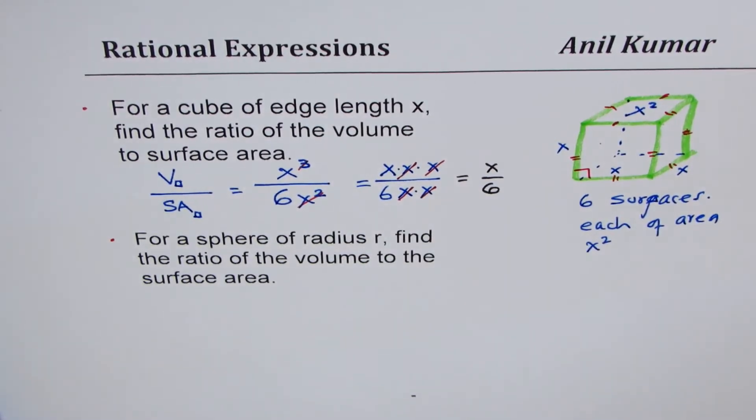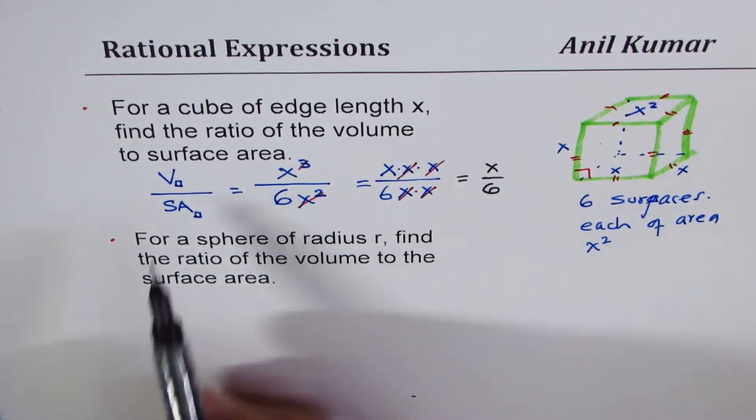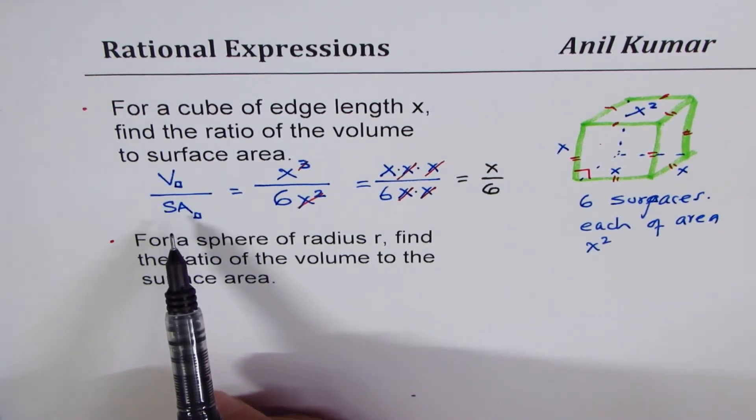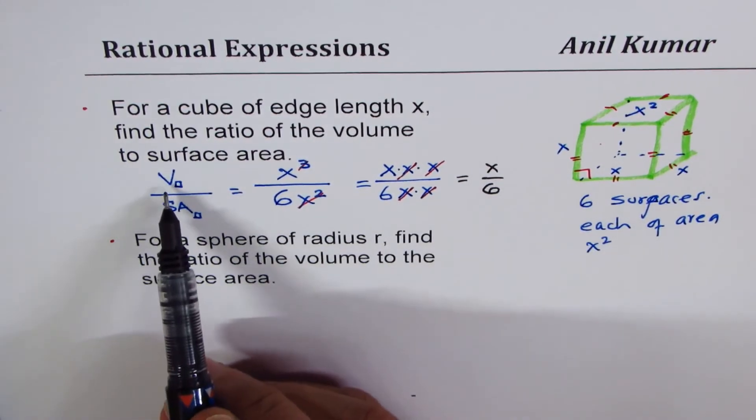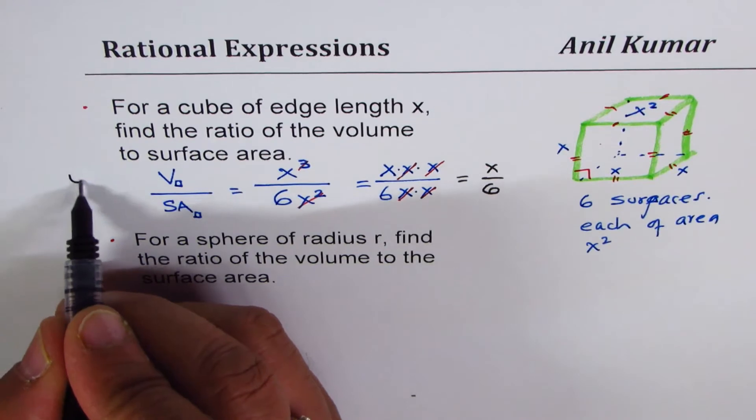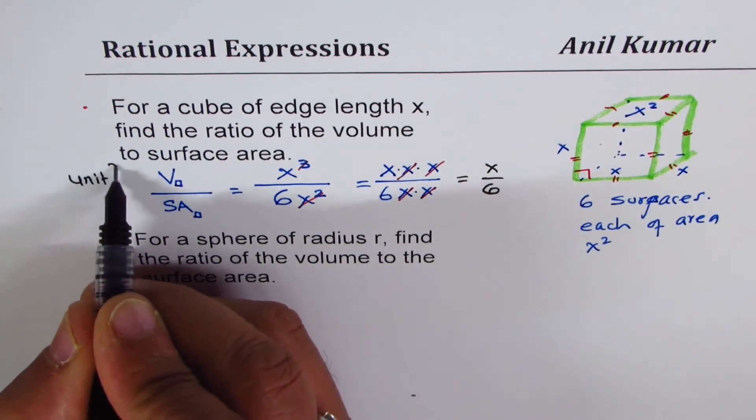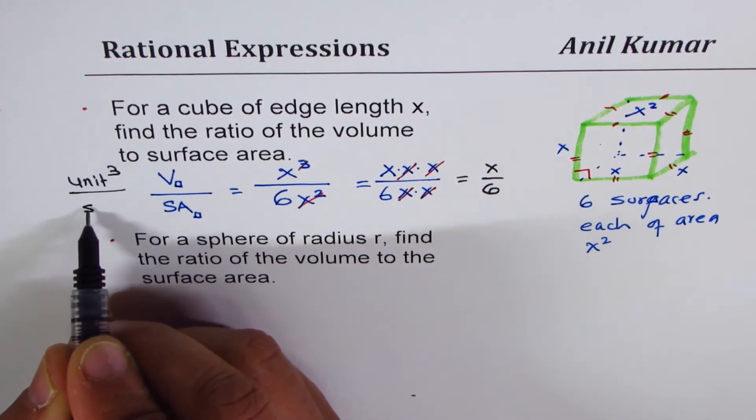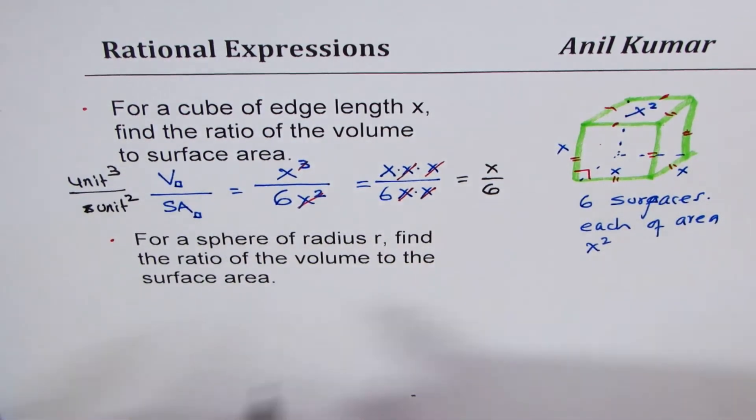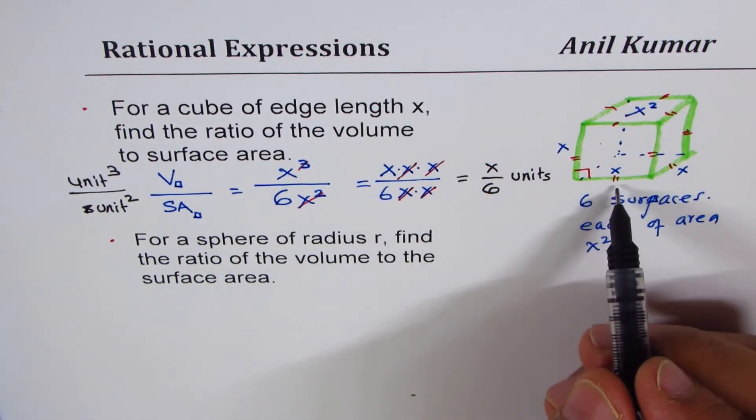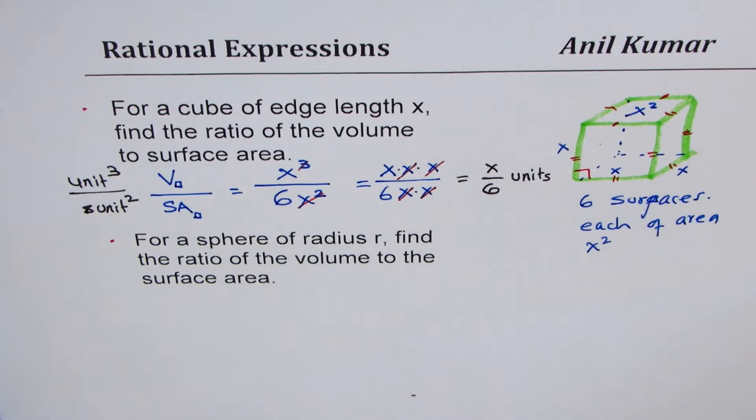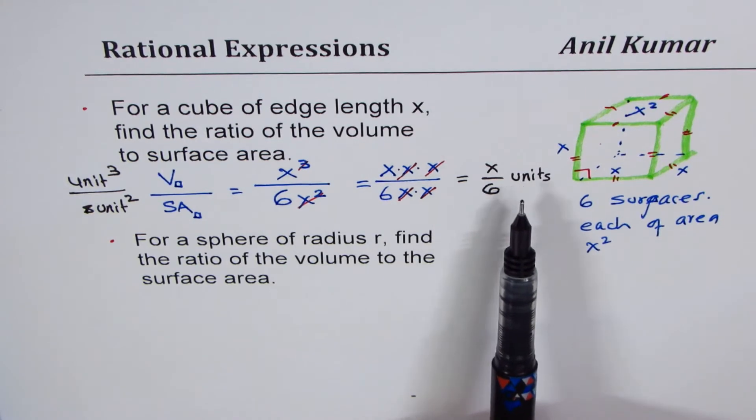So that becomes the ratio of volume to surface area. Now some of you who are more into this may also look into units. Volume is unit cube. Surface area is in unit square. So the units will be so many units. When I say units, if I say centimeter, it will be centimeter, meter, meter. So that gives you the units also. For some students, that may be very critical.